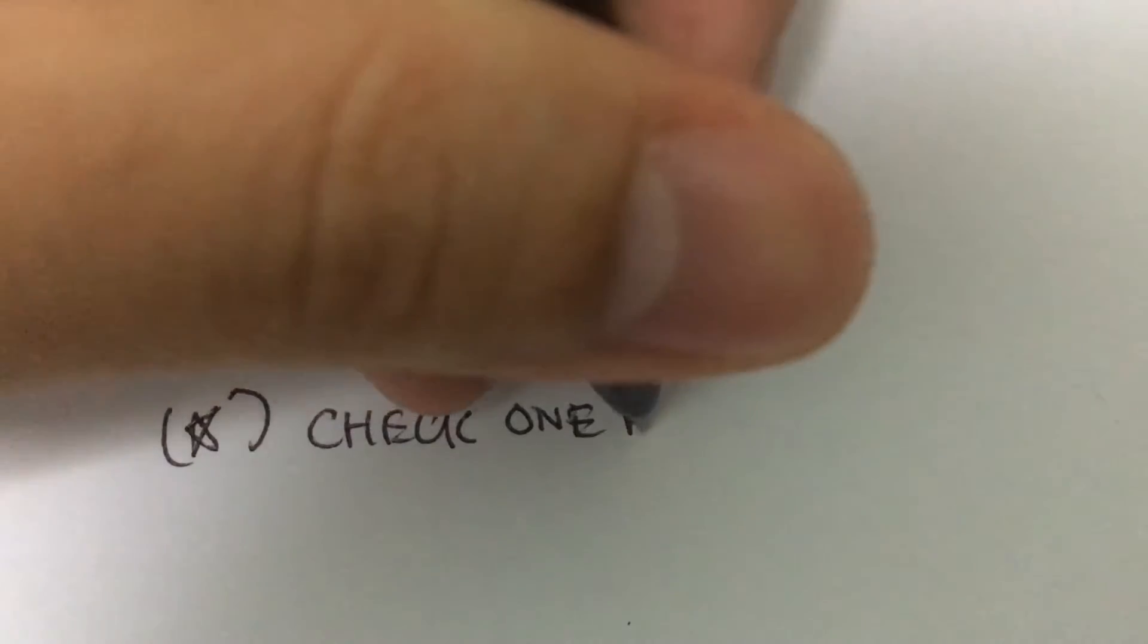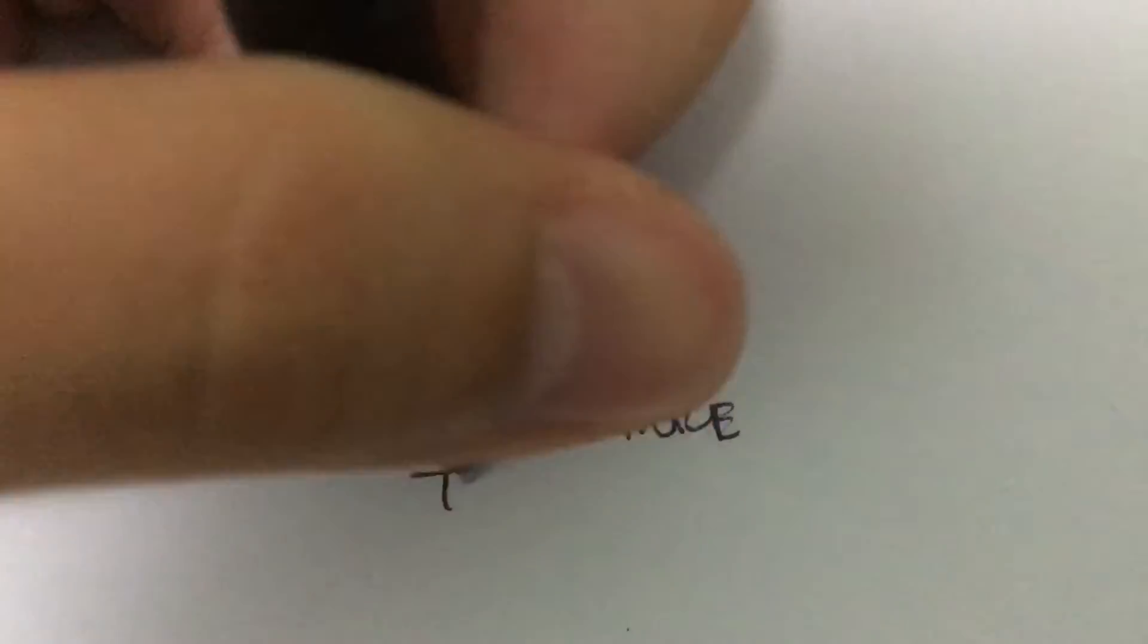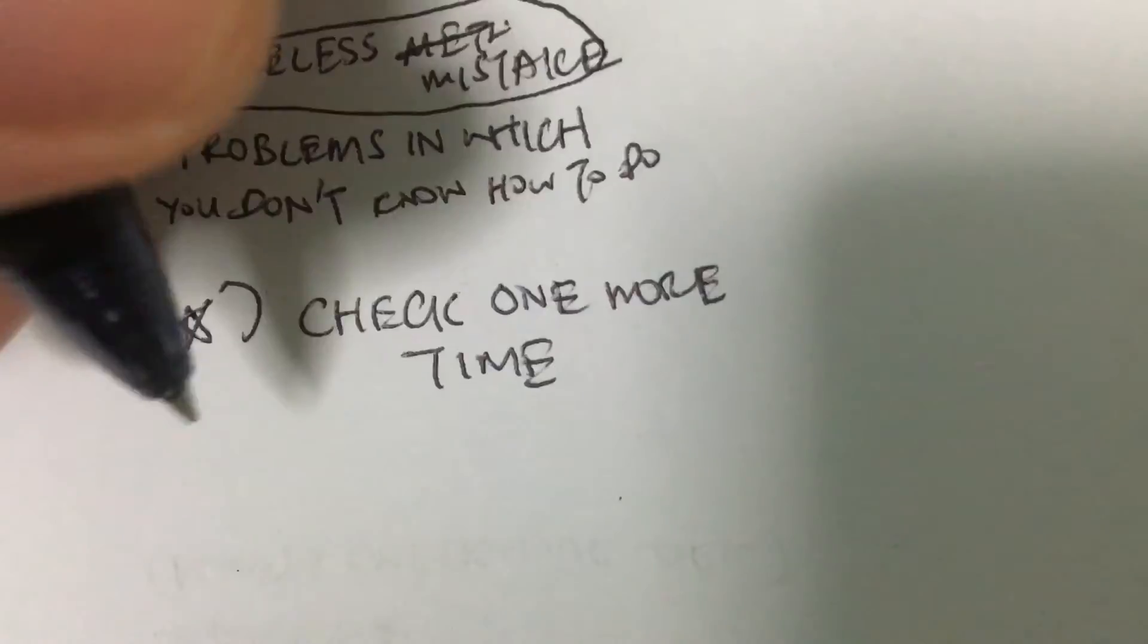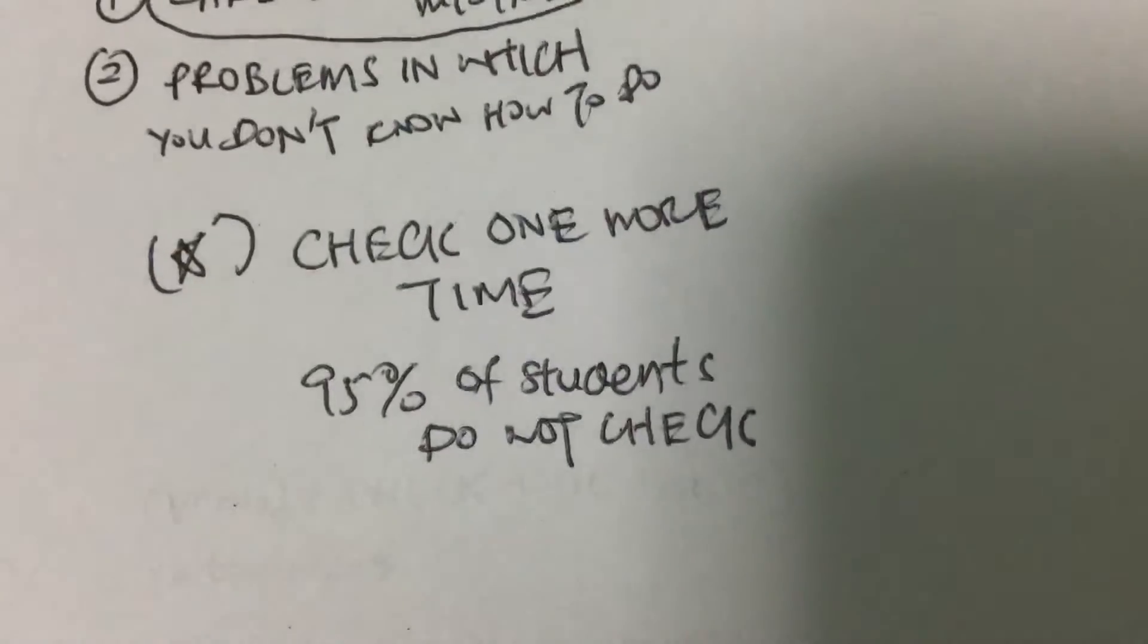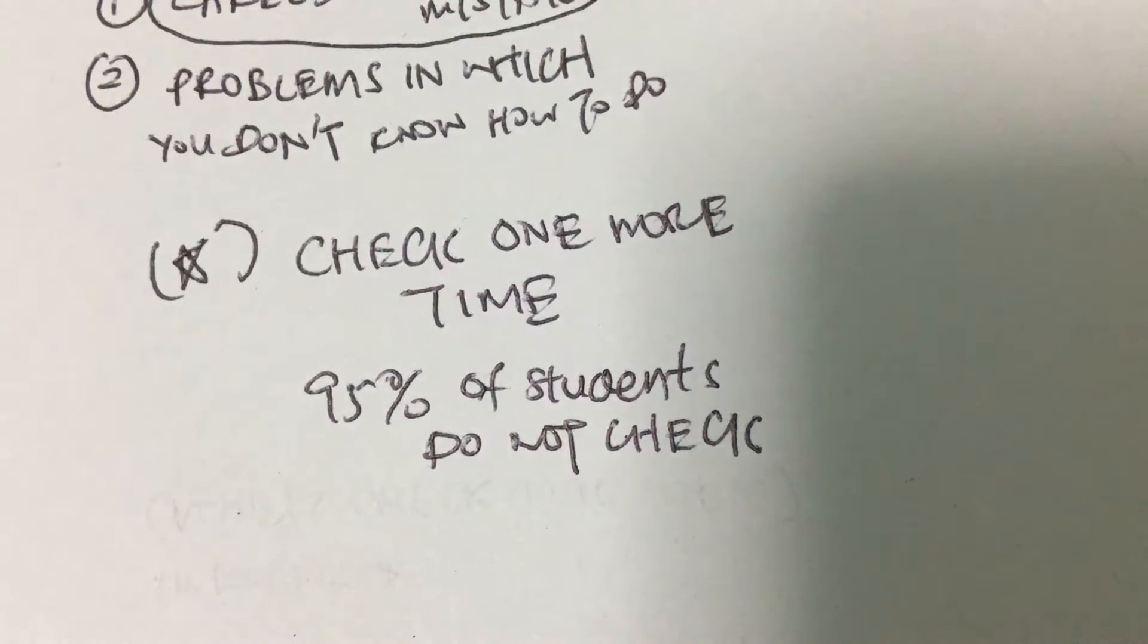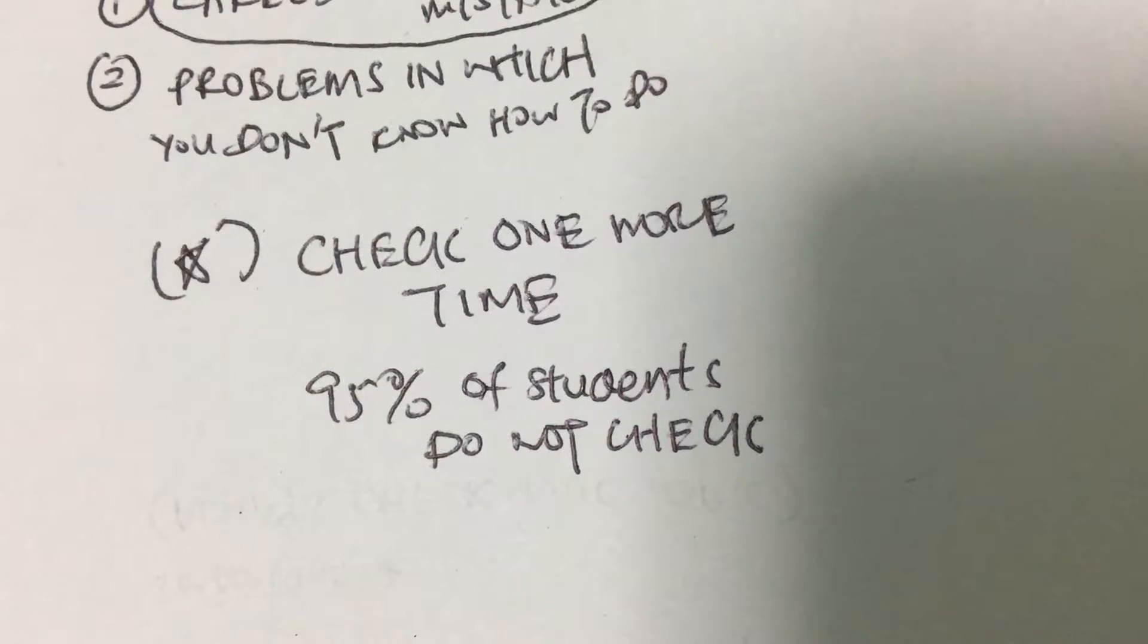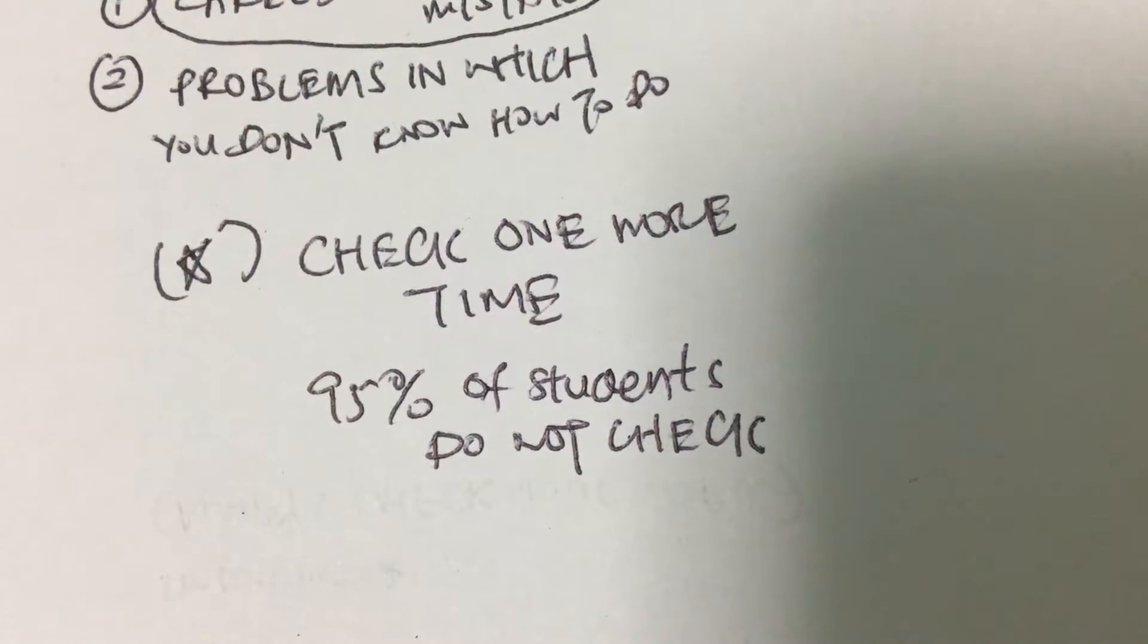Actually, about 95% of students do not check. What do I mean by do not check? It means they do not check their solutions one more time. When you do not check your solution one more time, you tend to make careless mistakes.